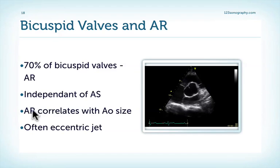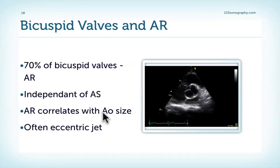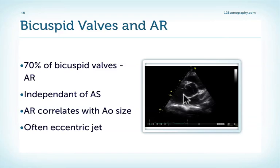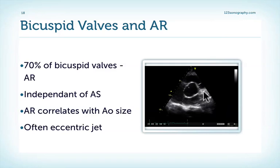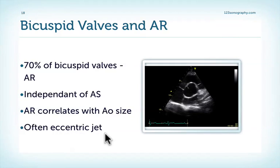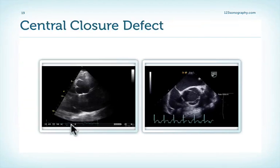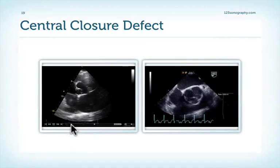We also know that aortic regurgitation correlates with aortic size. So the larger the aorta is, the more frequently we will see aortic regurgitation, and usually the more severe it is. Patients with bicuspid valves also have eccentric jets very commonly, which is a finding that you will also see in patients with aortic regurgitation.